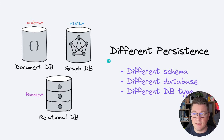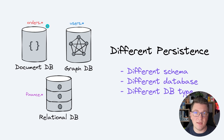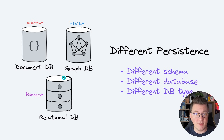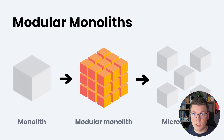The last level of data isolation is using a different schema, a different database, and a different database type. For example, I might decide that the orders module has a lot of unstructured data, so I want to use a document database. For the users module it's important to maintain relationships between entities, so I choose to model this with a graph database. And for the finance department they want to use a tried and true relational database.